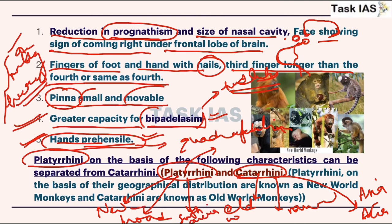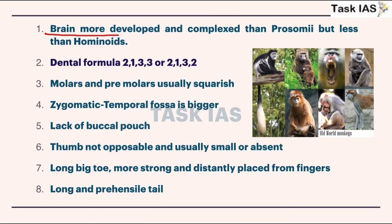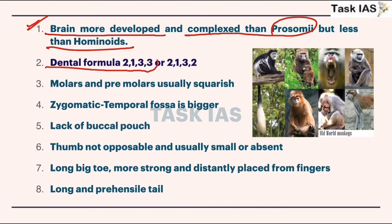The theory or hypothesis is that these new world monkeys were a part of the old world monkey category, and after isolation and migration to a different continent — South America — their features started diverging from their ancestor old world monkeys. Now we will discuss some features of platyrrhini that show differences with catarrhini. Firstly, the brain is more developed and complex than prosimians but less than hominids.